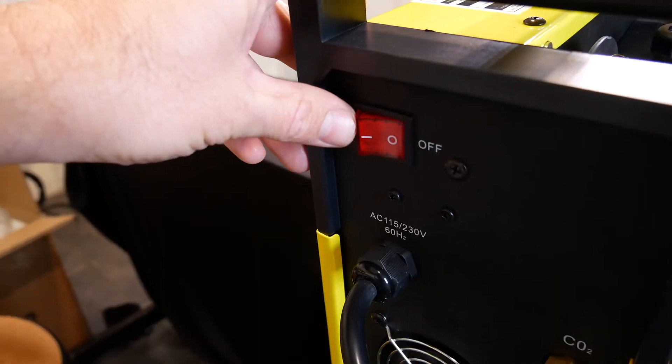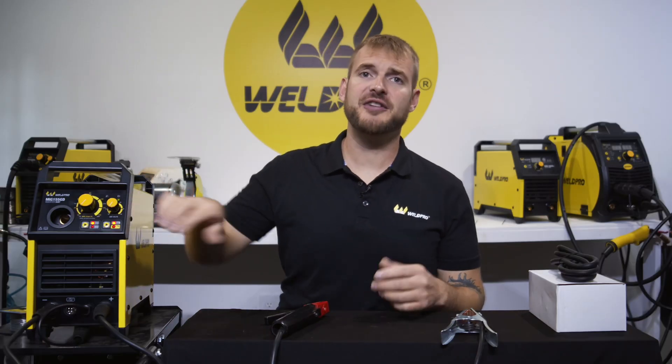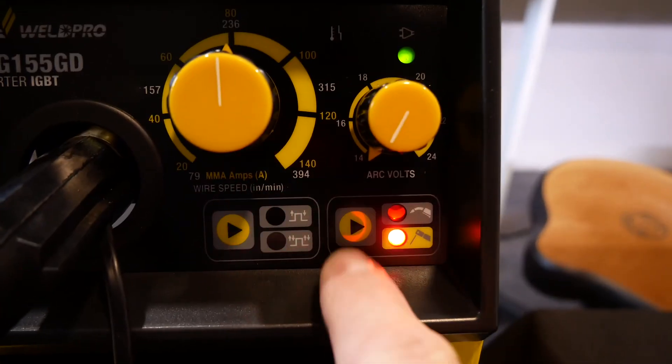If the only thing you're going to be doing is stick welding, go ahead and energize your machine at this time. In the lower right-hand corner on the face of the display, there's a button that allows you to select between stick and MIG mode. The machine has defaulted to MIG mode, so go ahead and press this button to switch to stick.